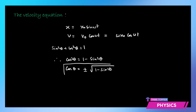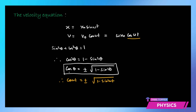So the same thing we are going to apply here. We will write that cos(ωt) can be written as ±√(1 − sin²(ωt)). So if I substitute this value here, velocity v becomes equal to ±ω x₀ × √(1 − sin²(ωt)).